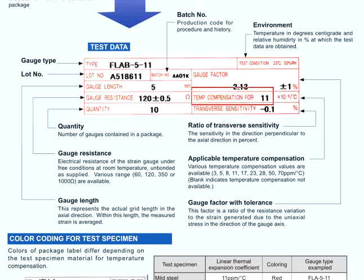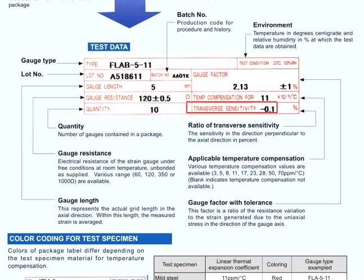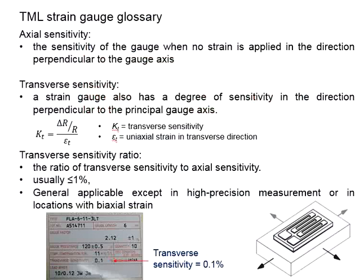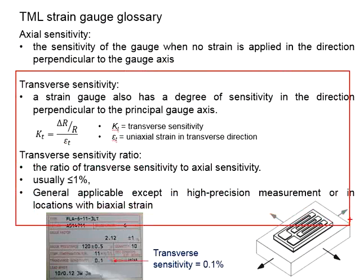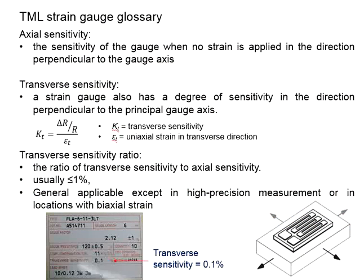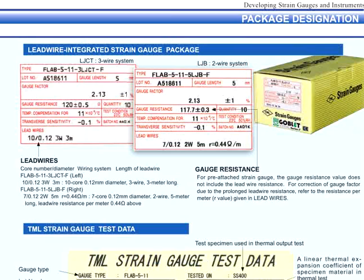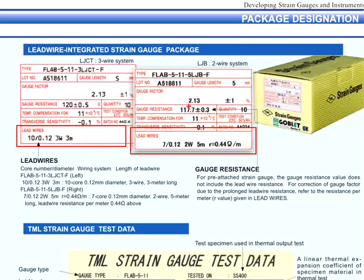Next, we have the thermal compensation as well as the transverse sensitivity. For the meaning of those terminologies, you may refer to the previous videos. In the case that lead wires are provided, the relevant details are also given on the package.